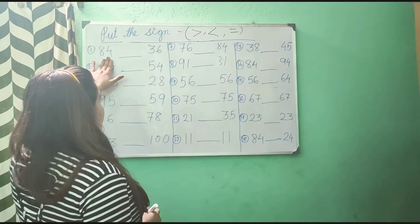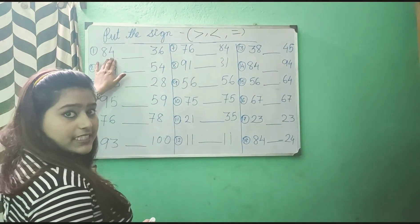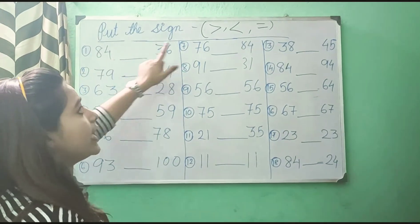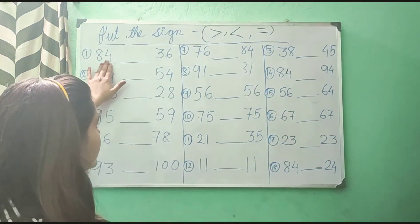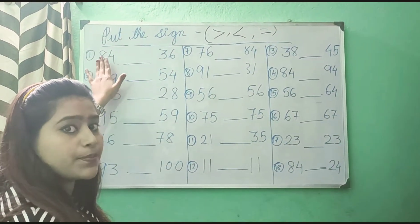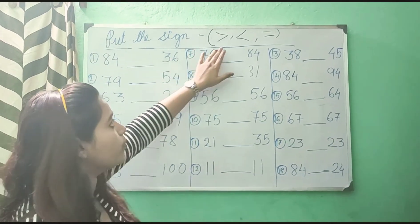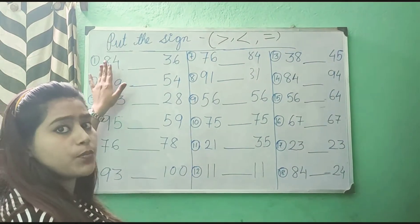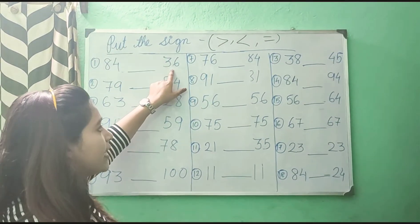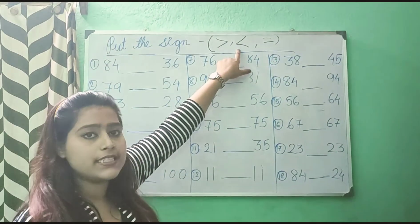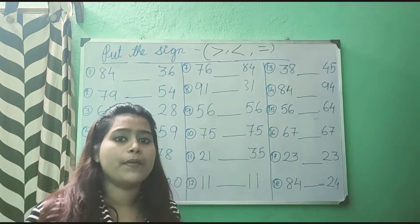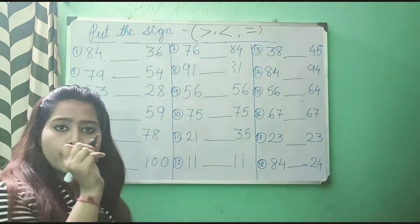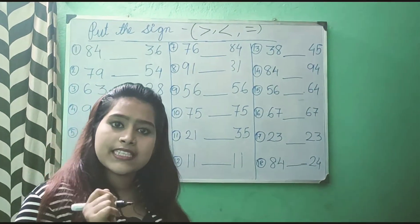See, if this number is bigger than the other, then we will put greater than. If the first number is bigger than the second one, then we will put greater than. If the first number is smaller than the second number, then we will put less than. And when the numbers are same in both places, then we will put equals to — means same.